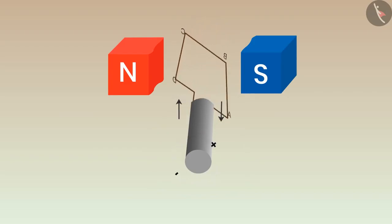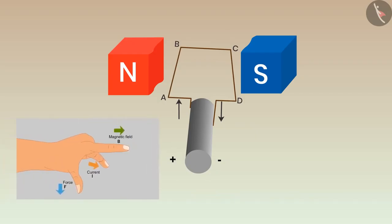If we apply Fleming's left-hand rule on the arm AB of the coil, then we get the direction of the force exerted on this arm by the magnet. We know that the direction of the magnetic field is from north to south. Also, the current is flowing in this direction on arm AB, then the force will be exerted downwards.